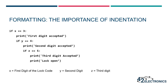Let's look at an example. This code simulates the type of code that might open a lock. The lock requires a three-digit code and the lock will only open with the code 3, 4, 5. What will happen when the digits 3, 4, 5 are entered? Let's work our way through the code and take a look at how it's set up. The code digits are initially programmed in using the variables x, y, and z.